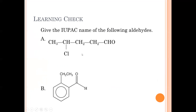Naming example A: counting the carbons — one, two, three, four, five — it's five carbons long, so this is pentane. There's a chlorine on carbon four, so this becomes 4-chloropentanal. We always assume the aldehyde is at carbon one since it's always at the end, though you can write it as 4-chloro-1-pentanal if helpful.